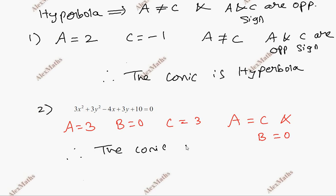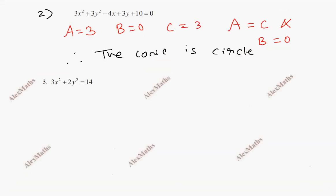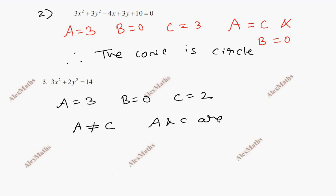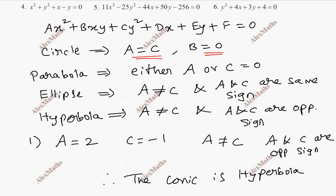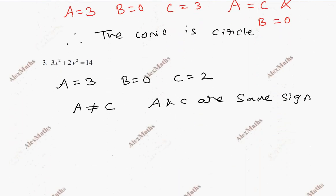Question number 3: the X² coefficient A value is 3, B value is 0 (XY term), and the Y² coefficient C value is 2. We pay attention: A is not equal to C, and A and C are the same sign. Not equal and same sign means ellipse. Therefore the conic is ellipse.